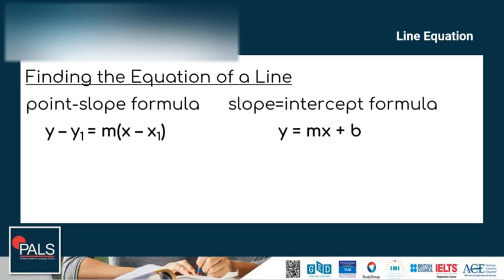In finding the equation of a line, let me introduce two sets of formulas that might be very useful. The first one is the point-slope formula and the second one is the slope-intercept formula. The point-slope formula is used when given a point and the slope. The slope-intercept formula is useful when we have the y-intercept and the slope.